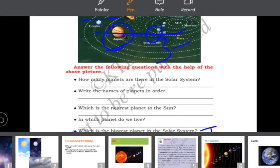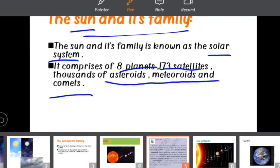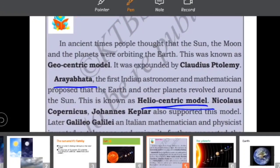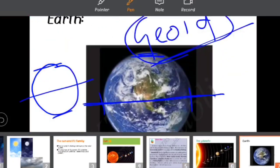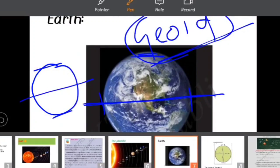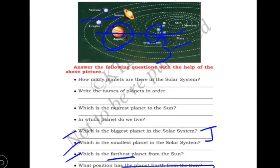In this class we studied the sun and its family, the heliocentric and geocentric models, the planets, the Earth, and the size and shape of the Earth, and solved some questions about the planets. We will continue this lesson in the next class. If you have any doubts, let me know in the comment section. If you found this video useful, please like, share, and subscribe. Thank you!